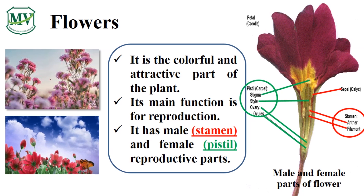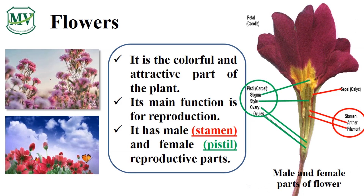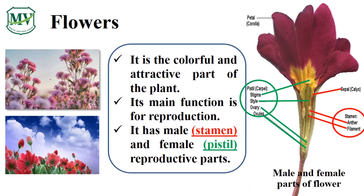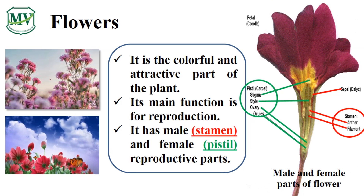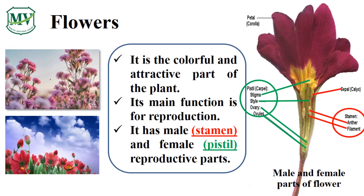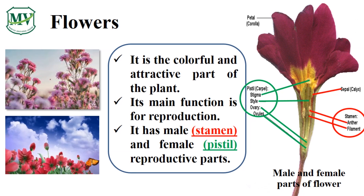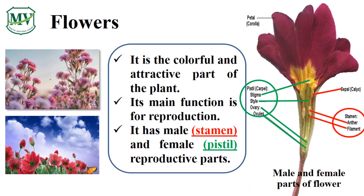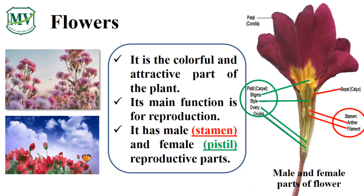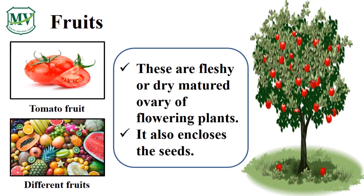Do you have any idea how plants reproduce? When the pollen from the stamen gets into the pistil, down into the ovary and fertilization happens, the ovary becomes bigger and it will eventually become a fruit. Fruits are part of a plant that have seeds. The fruits come from the fertilization of the plant that happened inside the ovary.